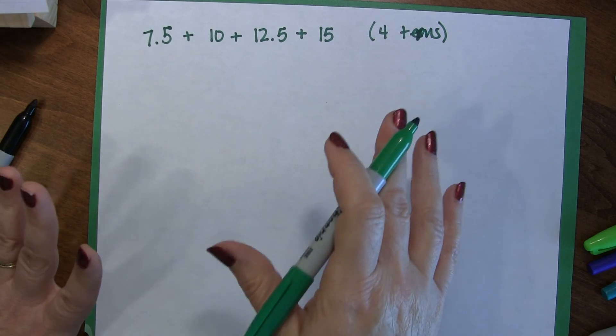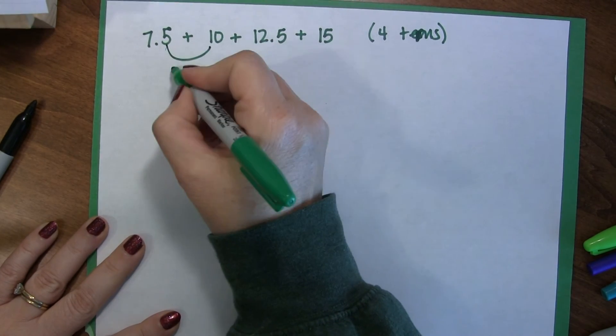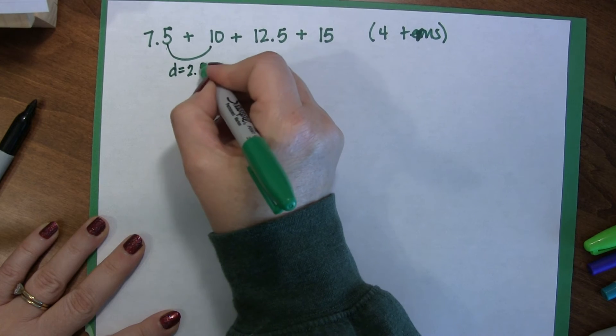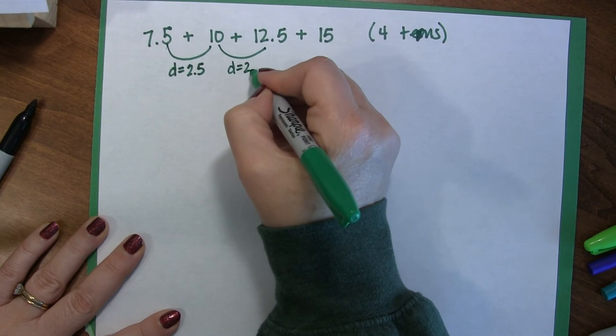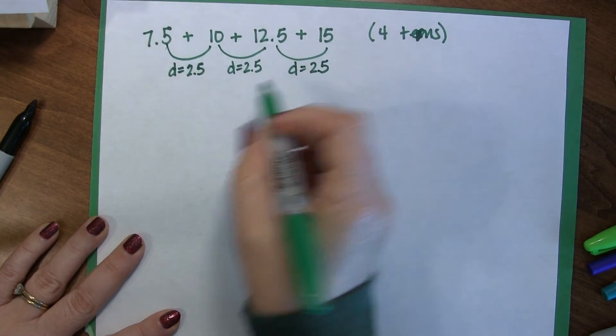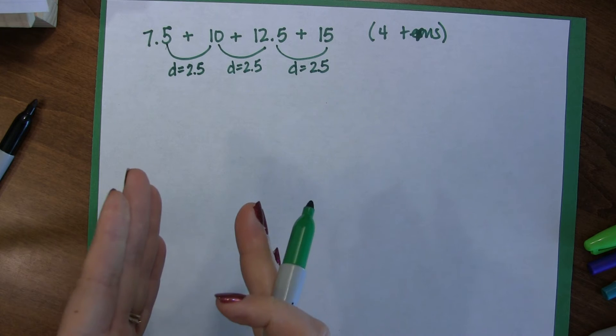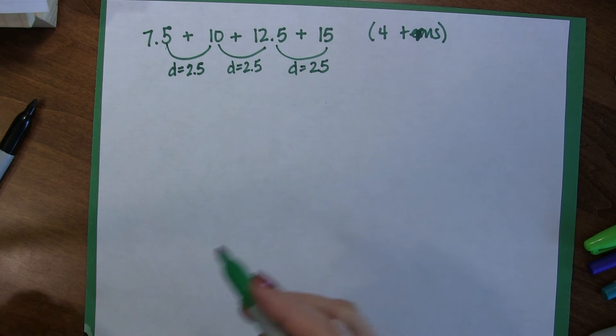This same method is going to work because, and this is key, the distance between the numbers is the same. That's a distance of 2 1⁄2. This is a distance of 2 1⁄2. This is a distance of 2 1⁄2. As long as you have a consistent distance between your terms, you can use this method.